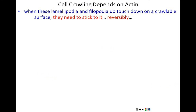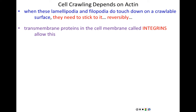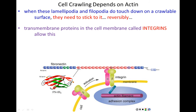Step one was reaching out towards the molecule. Next is anchoring. Once the lamellipodia and filopodia reach out in the direction of the signaling molecule, they need to anchor themselves — to touch down on a crawlable surface and stick to it so they don't retract back. The sticking needs to be reversible because the cell needs to continue crawling forward. This is also an actin-dependent process but involves actin in a different way. For anchoring, we have transmembrane proteins in the cell membrane called integrins.